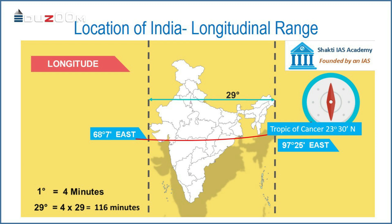You can also see that the Tropic of Cancer — 23 and a half degrees north — divides the country into almost two equal parts. And there is a fact that the east-west extent appears to be smaller than the north-south extent.